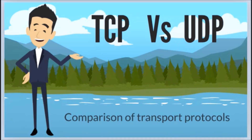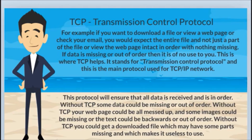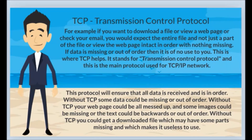Whenever a computer wants to communicate with another computer, the communication between them should be good and reliable, so that it is guaranteed that the data is received correctly. For example, if you want to download a file, or view a web page, or check your email, you would expect the entire file and not just a part of the file, or view the web page intact in order with nothing missing. If data is missing or out of order, then it is of no use to you.